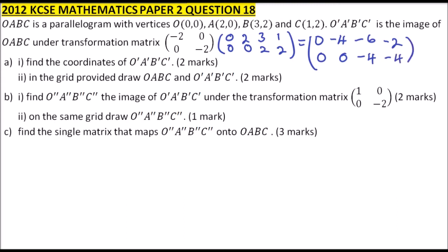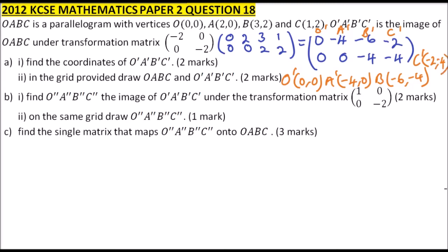So this gives us O', A', B', and C'. The coordinates of O' are (0,0); A' is (minus 4, 0); B' is (minus 6, minus 4); and finally C' is (minus 2, minus 4). I'm using that space because we still have a lot to work on.